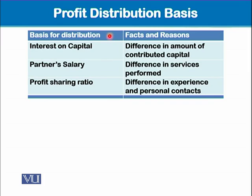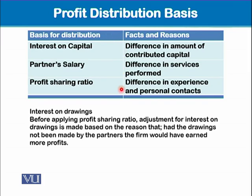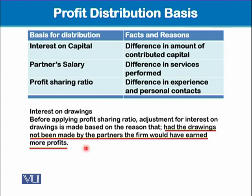We also work out interest on drawings. The reason is that had the drawings not been made by the partners, the firm would have earned more profits. So before distributing profit among the partners, we apply an interest rate on drawings and add this amount to the total net profit. This increases the profit, which is then distributed among the partners.